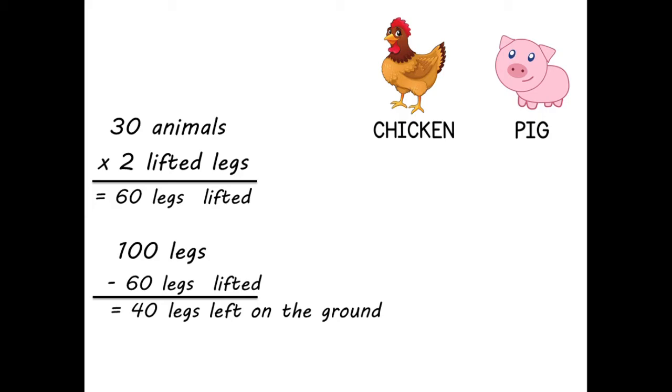Chickens have no legs left on the ground, while pigs each still have two legs left on the ground. Thus, these 40 legs must be pigs' legs.